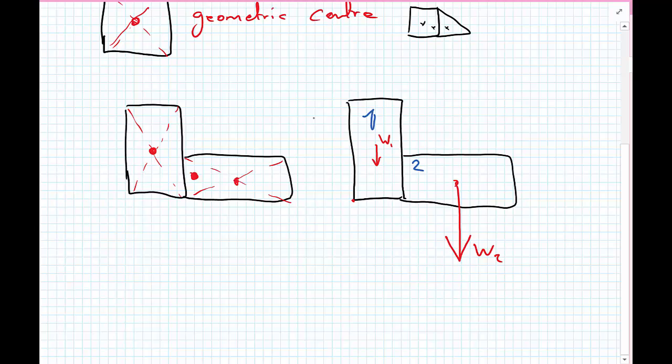Then you can imagine, especially if W1 is very light, the center of mass could be very close to the center of mass of body 2. Body 1, being very light, contributes in a much smaller manner.